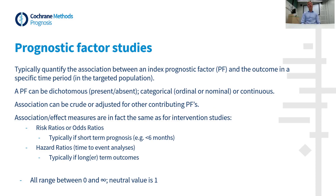In prognostic factor studies, researchers typically report the association between the prognostic factor of interest — the index factor — and the outcome that occurs in a pre-specified time period in the target population. A prognostic factor can be dichotomous (yes/no), categorical with more than two categories, or continuous, like blood pressure. The association between the index factor and the outcome can be crude or unadjusted, but it can also be adjusted, meaning that the association is corrected for the contribution by other prognostic factors.